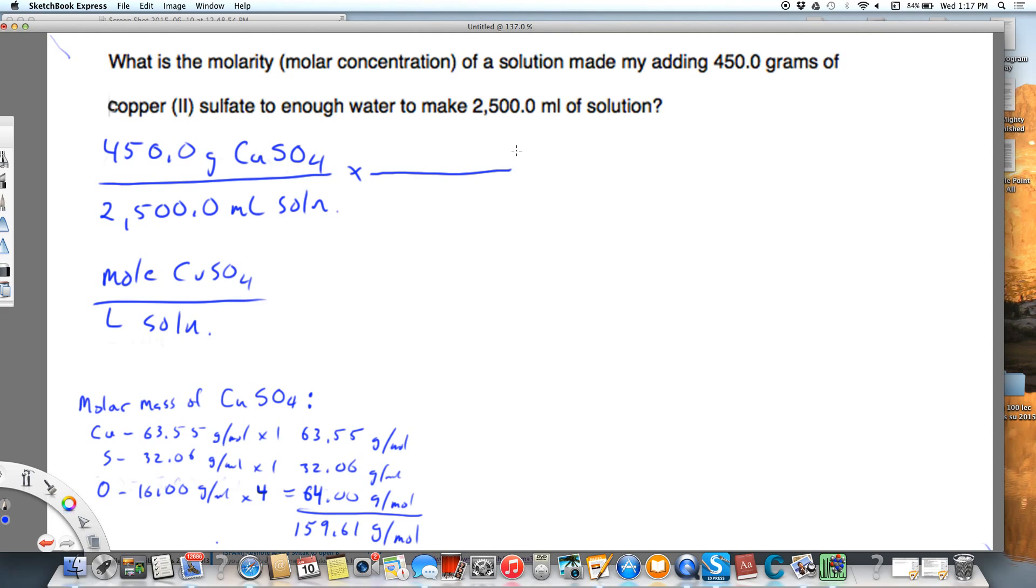We're going to start with CuSO4. I want to get rid of grams CuSO4 and get moles CuSO4. I've already calculated the molar mass. I got these values off the periodic table - those are the atomic masses of the elements. Then I multiplied oxygen by 4 and the others by 1, and I got 159.61 grams in 1 mole. So now grams will cancel, I've got moles.